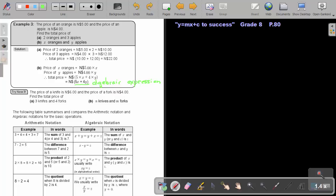I want you to do for me, try now 3, do number A as well as number B. Let's look at 3, try now 3. I'm saying the price of a knife is $6, and the price of a fork is $4, find the total price of 3 knives and 4 forks.